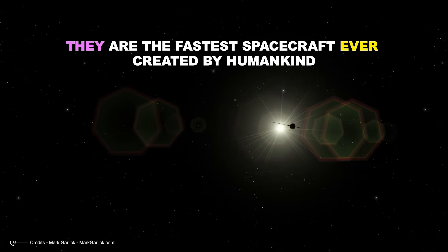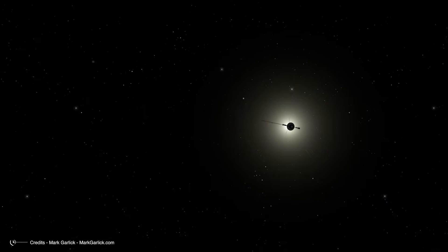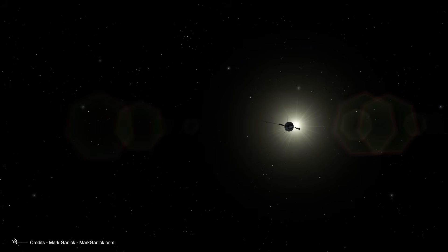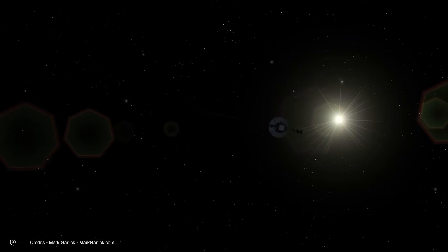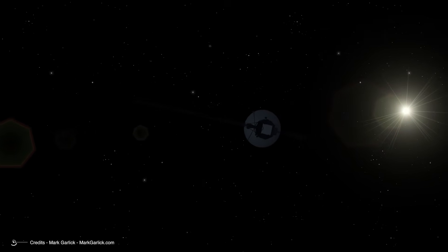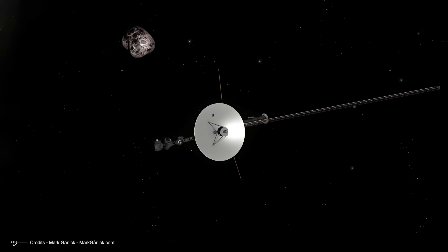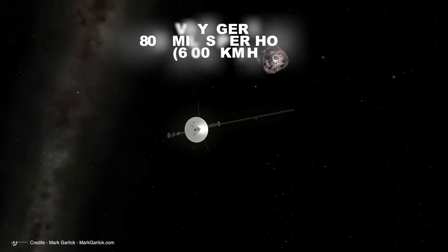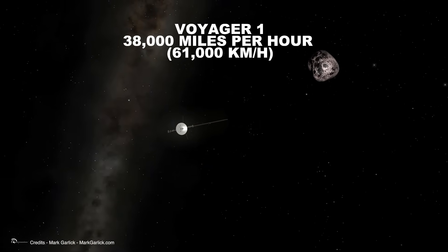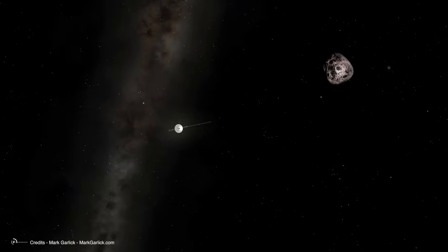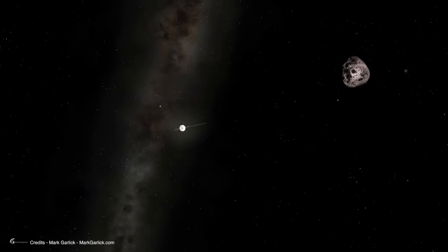They are the fastest spacecraft ever created by humankind. It's common to hear that the Voyager probes, being so far away, must be the fastest ever built by humans. But this isn't true. Although both reached impressive speeds for their time, today's spacecraft have far surpassed them. Voyager 1, the faster of the two, travels at about 38,000 miles per hour relative to the Sun. That makes it the most distant human-made object from Earth, but not the fastest.